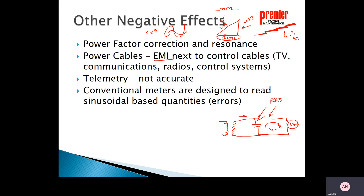Other negative effects include electromagnetic interference from power cables to nearby control, communications, TV, or radio cables. Telemetry for reading watts, vars, power factor, voltage, and current may not be accurate unless true RMS metering is used. Conventional meters are designed to read sinusoidal quantities, so non-sinusoidal waveforms will produce measurement errors.